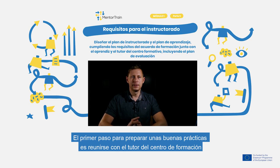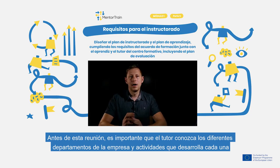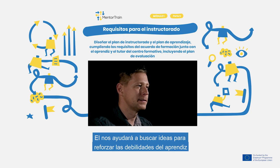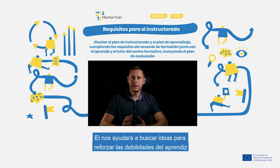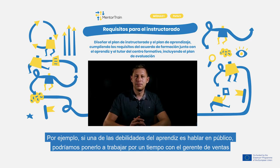The first step for designing a perfect mentoring and apprenticeship plan is meeting with the mentor. Before that meeting it's important that the apprentice already has knowledge about different departments and their tasks in the company. It helps to find possibilities where we can develop the weaknesses of the apprentice into strengths. For example, when one weakness of the apprentice is presentations, then the apprentice could work together with sales engineers.